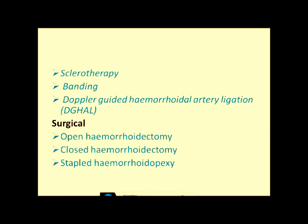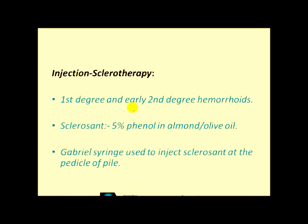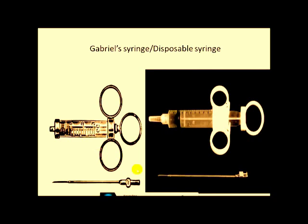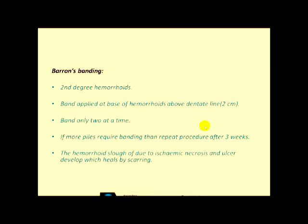Sclerotherapy is another remedy for hemorrhoids. Rubber band ligation can be done, and Doppler-guided hemorrhoidal artery ligation can also be performed. The surgical procedures are open hemorrhoidectomy, closed hemorrhoidectomy, or stapled hemorrhoidopexy. Injection sclerotherapy is done for first and early second degree hemorrhoids. The sclerosant used is 5% phenol in olive oil, injected using a Gabriel syringe at the pedicle of the pile. This has now been replaced by disposable syringes.